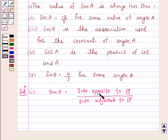Now side opposite to angle A can be greater than side adjacent to angle A. So in that case the value of tanA will be greater than 1. Hence the value of tanA is always less than 1 is an incorrect statement. Hence the answer for the above part is false.